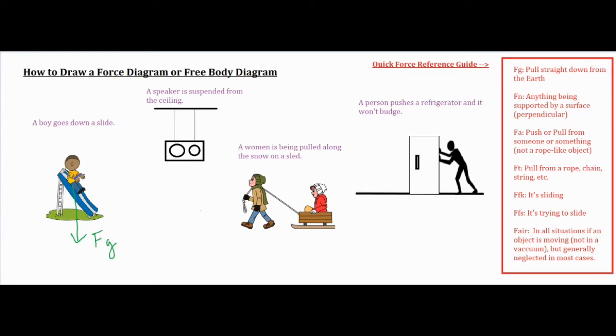Fn, the normal force, is it being supported by a surface? The boy is being supported by the slide itself. So we're going to make sure we draw the line angled so that it is perpendicular and creates a 90 degree angle with our surface going this way.